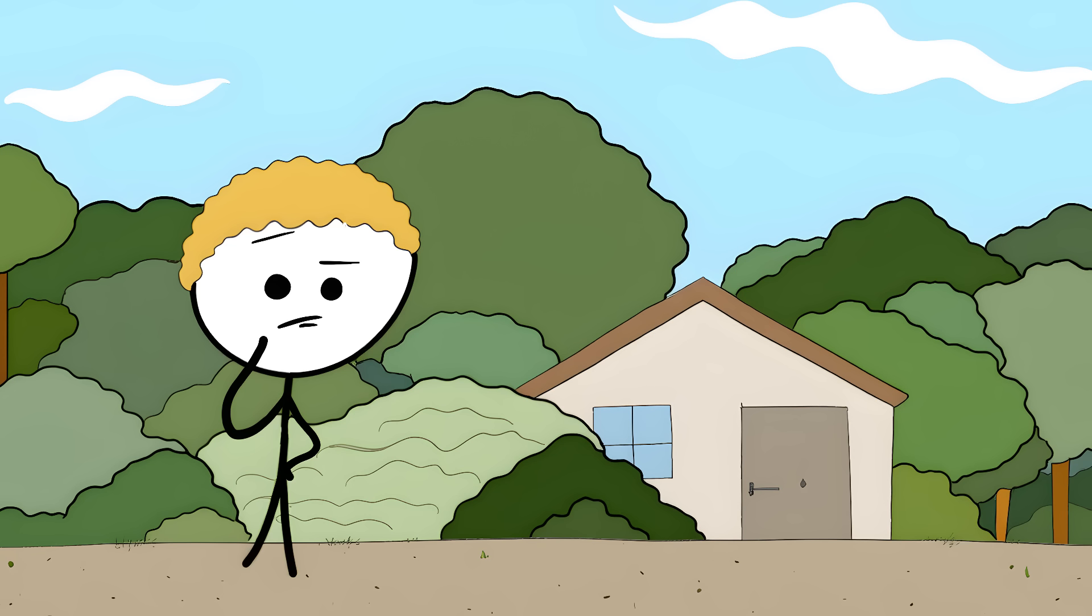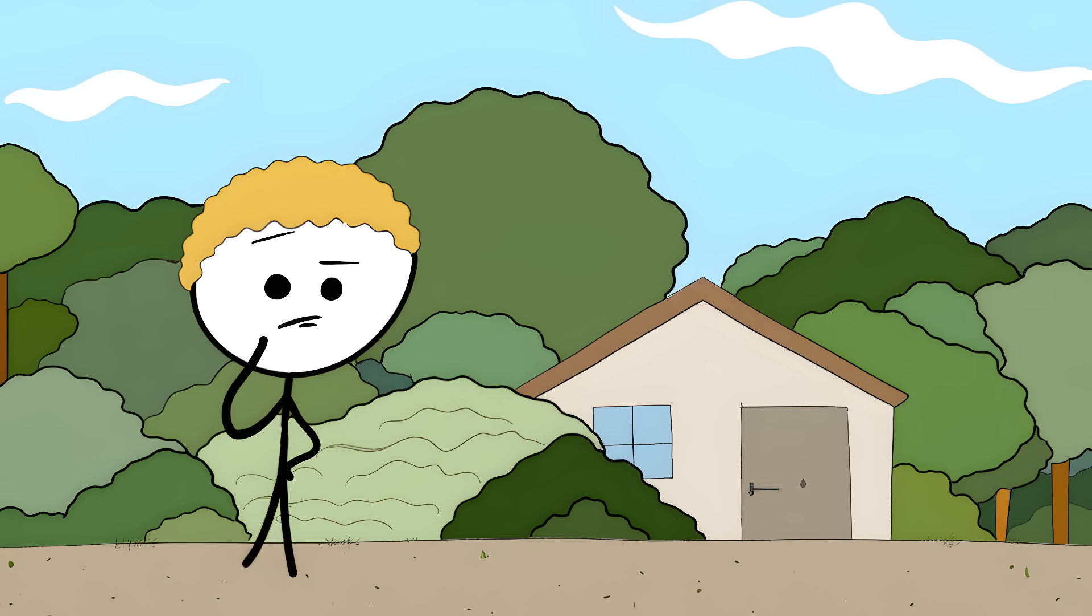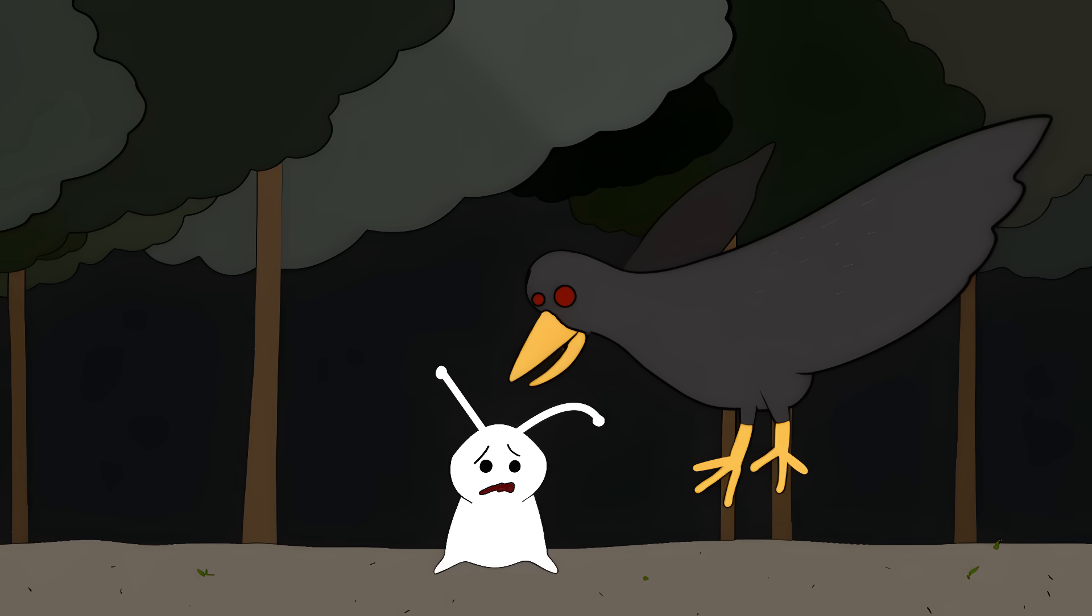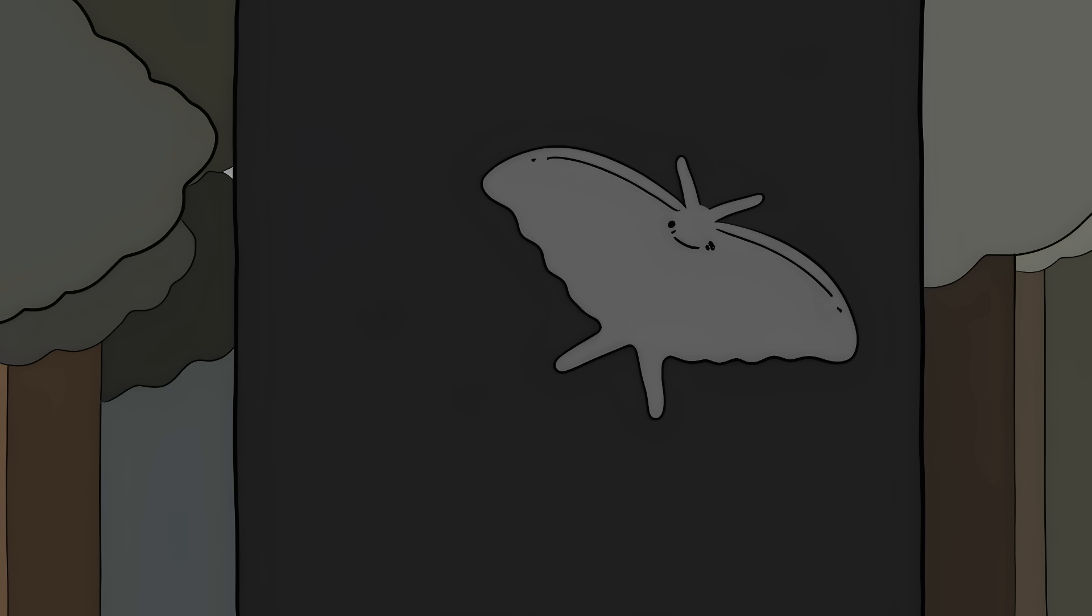Take the peppered moth, for example. During the Industrial Revolution, white moths started turning black. Because factory smoke turned all the trees black, and white moths stuck out like a sore thumb. Birds could spot them easily and eat them. The darker moths survived better.